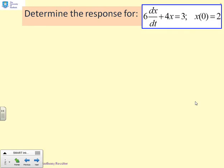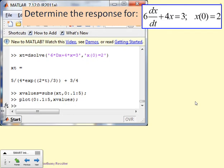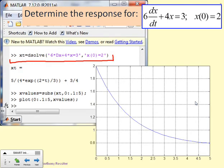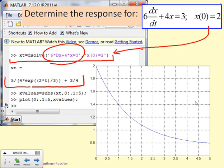So here we go. You need to determine the response for 6dx/dt plus 4x equals 3 with initial condition x(0) equals 2. Well, this code here shows you how to enter that into MATLAB. So here's the line. And what you want to do is see the link between this line and what you had up here. So the x(0) equals 2 has gone in there. And you'll see in here I've written the ODE pretty much as it comes. 6 times dx means 6dx/dt plus 4 times x means 4x equals 3. And I've just added the initial condition.